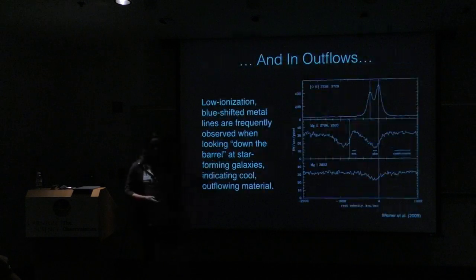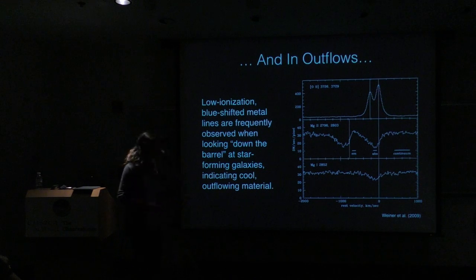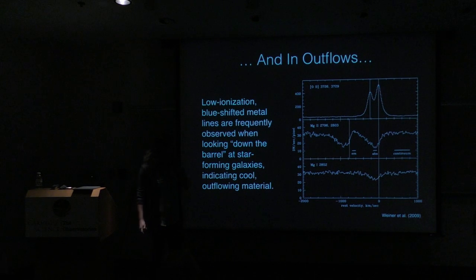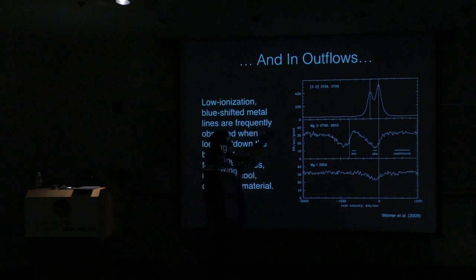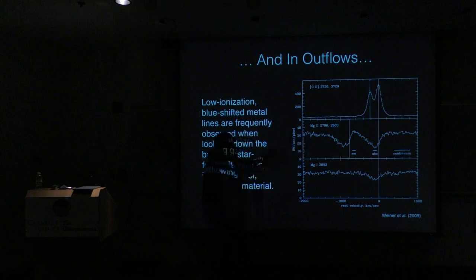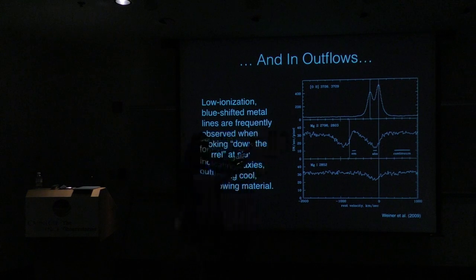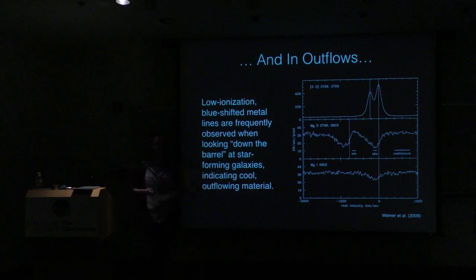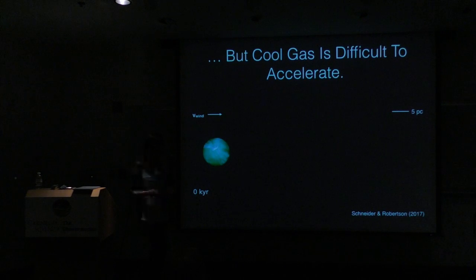We also know that cool gas exists in outflows. This shows absorption line spectra from a stacked sample of galaxies by Ben Wiener at about redshift one. Looking at the systemic redshift from the oxygen-two line and comparing to the absorption feature in the magnesium-two doublet, you can see velocities in the cool phase extending out to maybe 600 kilometers per second in this sample. Other work has shown cool gas traveling at 1000 kilometers per second - which might seem like a simple explanation for cool gas in halos.